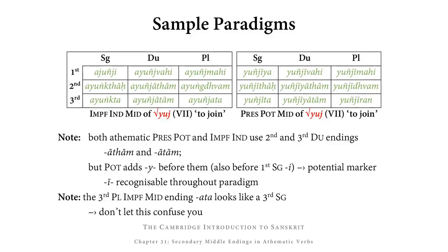In the dual we get ayuñjvahi, ayuñjātām, and ayuñjātām. Notice that we have the same endings -tām and -tām as with thematic verbs, but we have ā-tām and ā-tām instead of e-tām and e-tām, which we saw in thematic verbs. Then finally the plural: ayuñjmahi, ayuṅkdhvam, and ayuñjata.